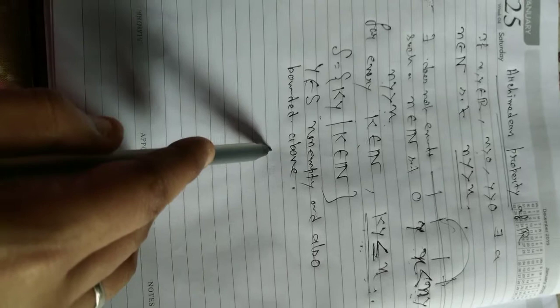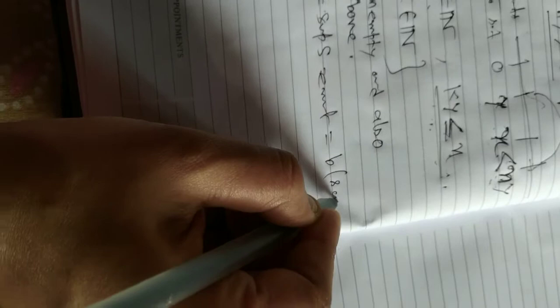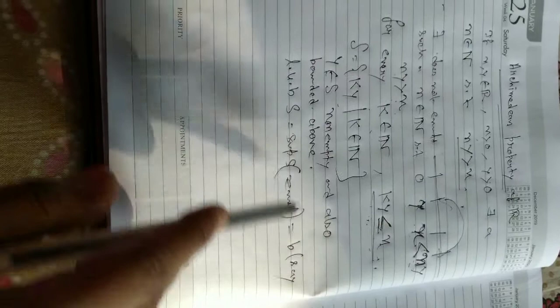So S is a non-empty bounded above set, so by the supremum property, the least upper bound of S exists. Let this equal b. By the supremum property, every non-empty bounded above set of real numbers has a least upper bound, so the supremum exists and we call it b.